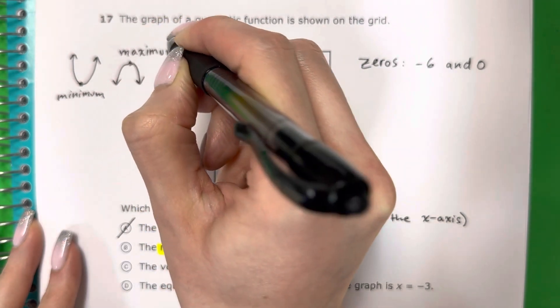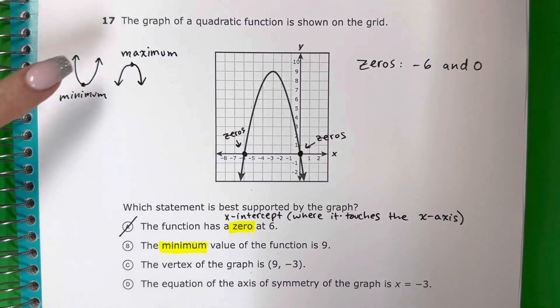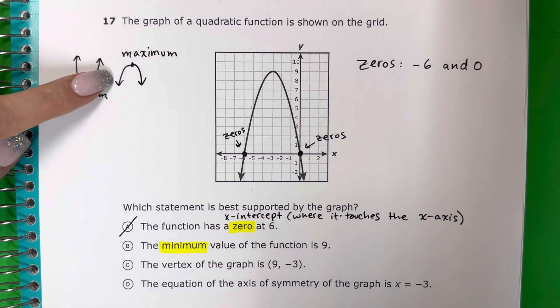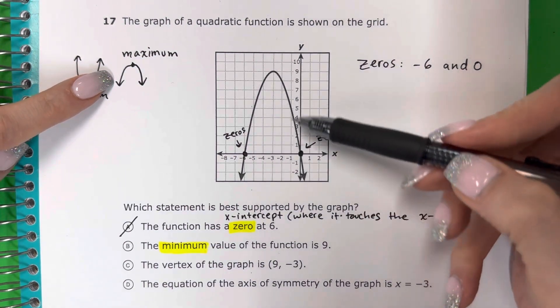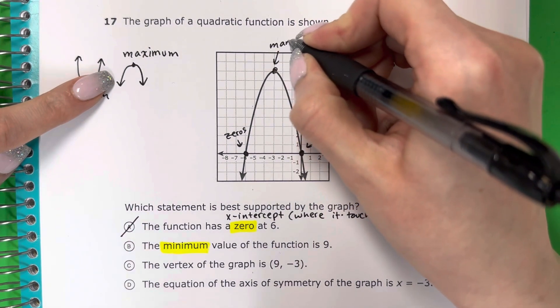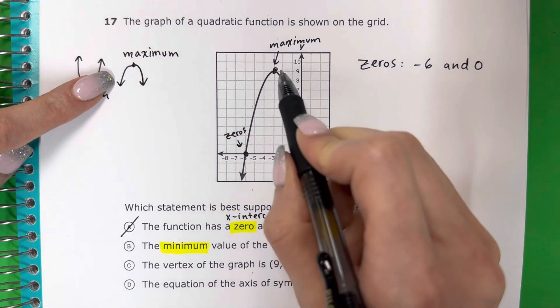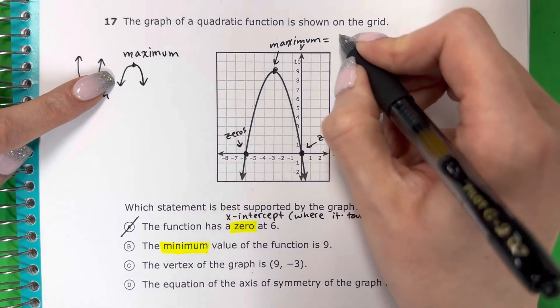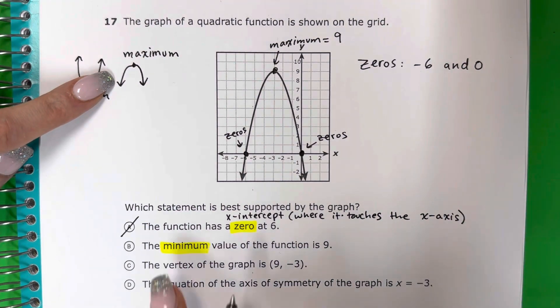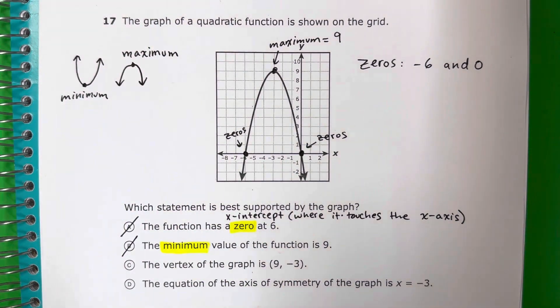And how I like to remember it is like maximum is like really high, a very high number or a very high height. I like to think about this one like a mountain. So this one is like a mountain. This one actually has a maximum, and maximum is the height. It looks like the maximum is at 9. So this is not correct. It doesn't have a minimum, there's a maximum. The number is correct, but it's not minimum.